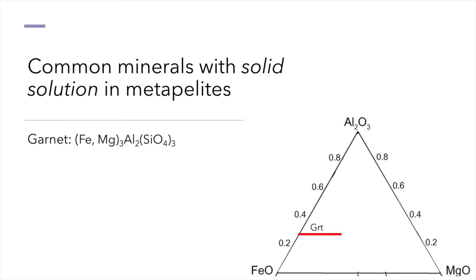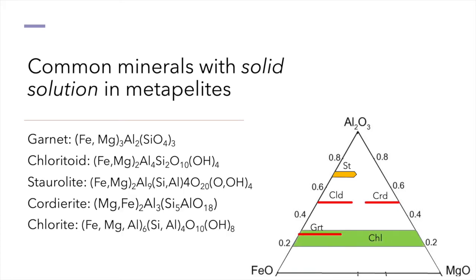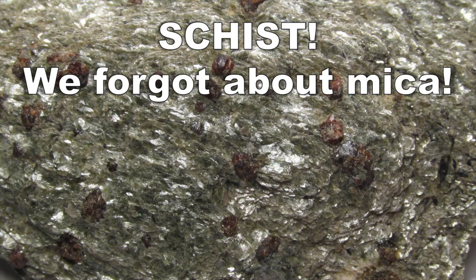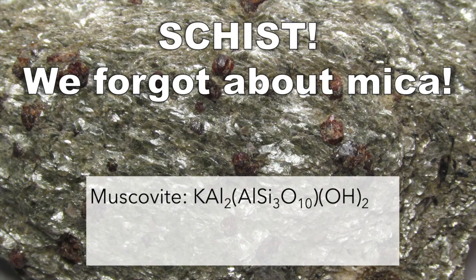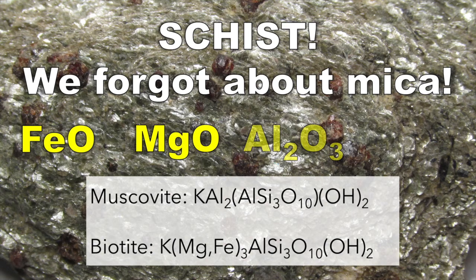Other minerals composed of aluminum, iron, and/or magnesium — plus the neglected components of silica and water — that are common in pelitic metamorphic rocks include chloritoid, staurolite, cordierite, and chlorite. However, we are missing some very important phases. Pelitic schists contain visible flakes of muscovite, and often biotite, which give schist its flashy appearance. Micas are important phases in almost all metapelites, and potassium is an important component in these rocks. This leaves us with four principal components, after ignoring minor components like calcium and sodium, considering H2O to be perfectly mobile, and projecting from quartz.